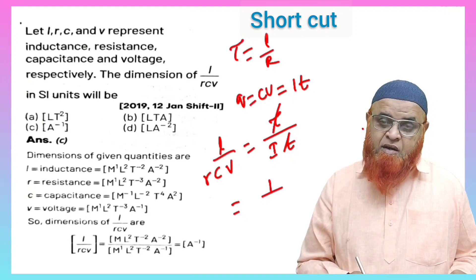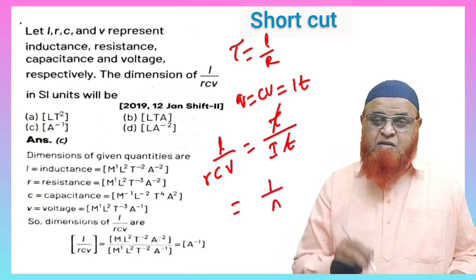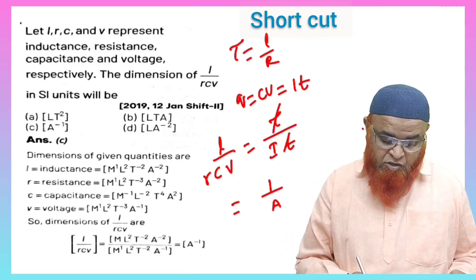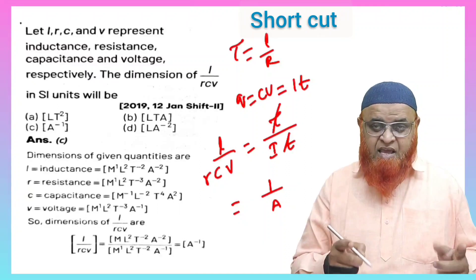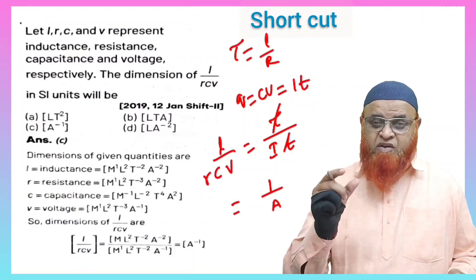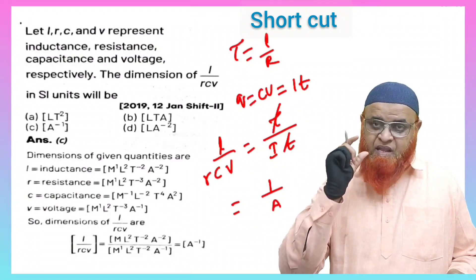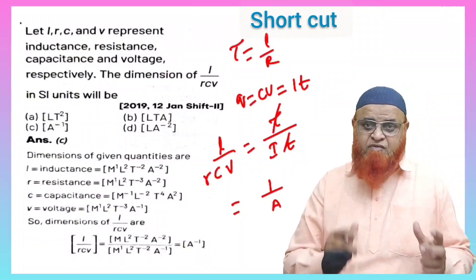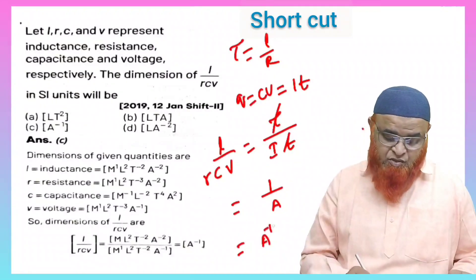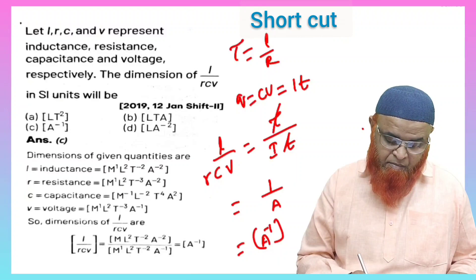Then what is left here now? One by I. I is nothing but current. And this can also be written as A. A means ampere. What is the dimension formula for current? That is taken as A. That is the symbol for current. So just take this to the numerator and we will be getting A power minus one.